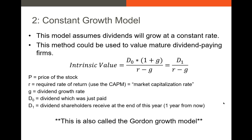The next model is the constant growth model — essentially our Gordon growth model. We assume dividends grow at a constant rate forever, which is obviously not realistic, but it's a simplification. The formula is D0 times (1 plus the dividend growth rate), all divided by our discount rate minus our growth rate. Our discount rate in this model is always calculated using the CAPM. This discount rate has many names: required rate of return, market capitalization rate, discount rate, cost of equity — they're all the same thing.